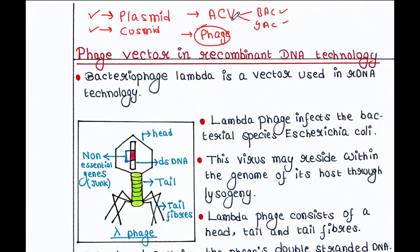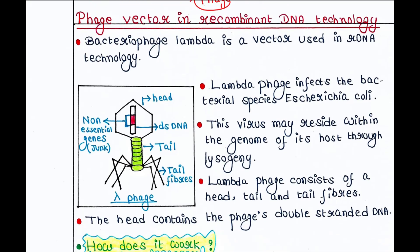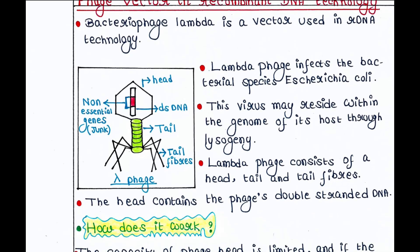Bacteriophage lambda is used as a vector in recombinant DNA technology. Let's first check the structure of this lambda phage.